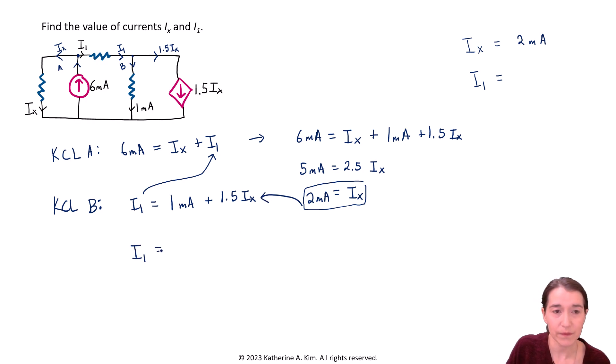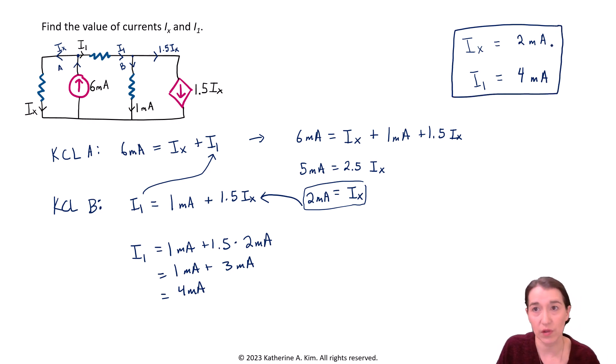So I1 is equal to 1 milliamp plus 1.5 times 2 milliamps. All right, so we're going to get 1 milliamp plus 3. And that is just going to be 4 milliamps. All right, so now we can write that over here. 4 milliamps is our circuit. So that's our answer as well. So we've solved it. We can box our final answer here. So we found what we're looking for.